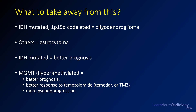In summary: tumors that are IDH-mutated and 1p19q co-deleted are oligodendrogliomas; all other tumors are astrocytomas. IDH-mutated tumors carry a better prognosis, and MGMT hypermethylation confers a better prognosis, better response to chemoradiotherapy, and a higher chance of pseudoprogression.